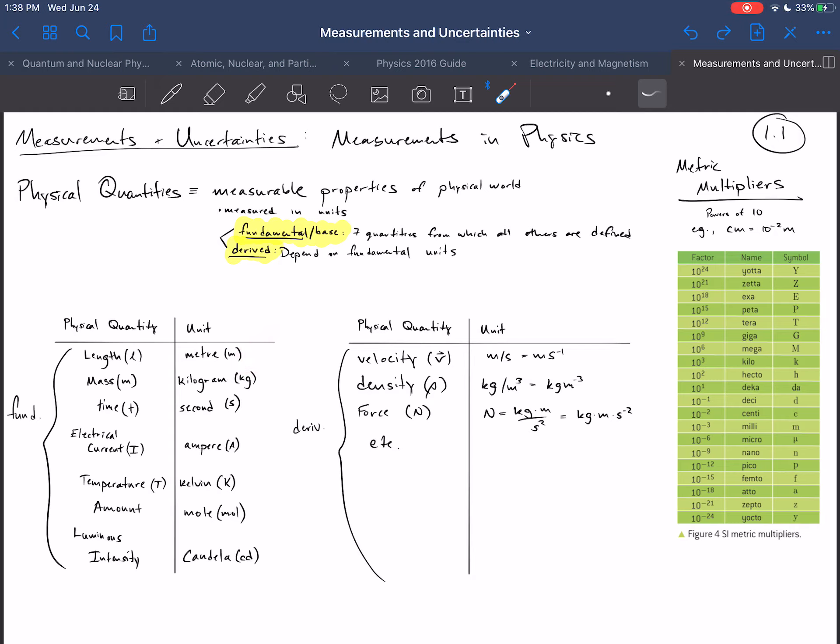One thing I didn't quite get to last time, which I wanted to make sure to highlight, is that there is one weirdness about the use of the metric multipliers with the fundamental physical quantities, and that is, for mass, the fundamental quantity is actually the kilogram. In every other case, the lack of a metric multiplier tells you what the fundamental unit is. That is not the case for mass for a number of historical reasons, and I apologize for that.